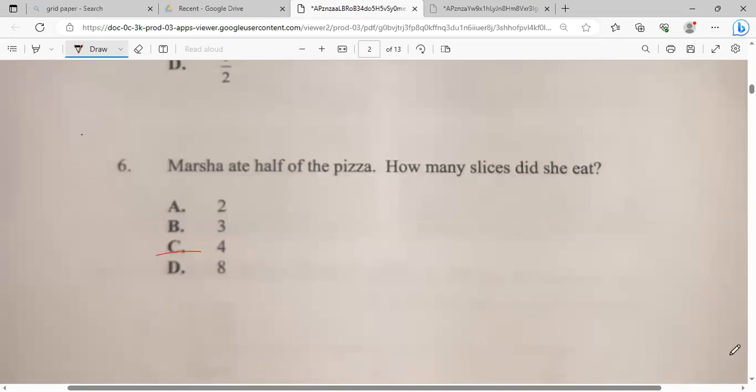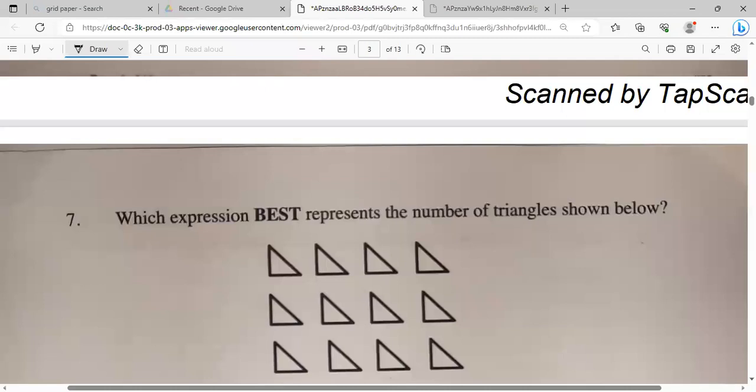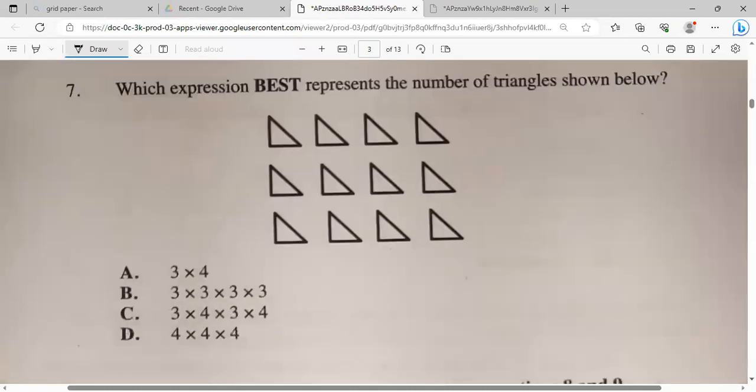Let's move on to number seven. Which expression best represent the number of triangles below? And here we can count the number of triangles. That would be one of the good way to do it. Once you get things like this, ensure that you know the total. So our total is 12. So which one of these can give it 12? Three times four is 12.